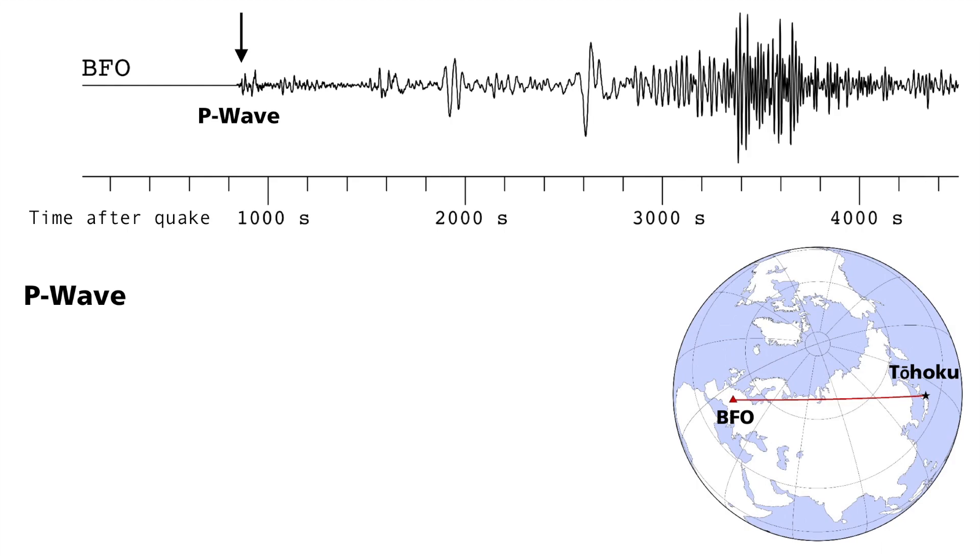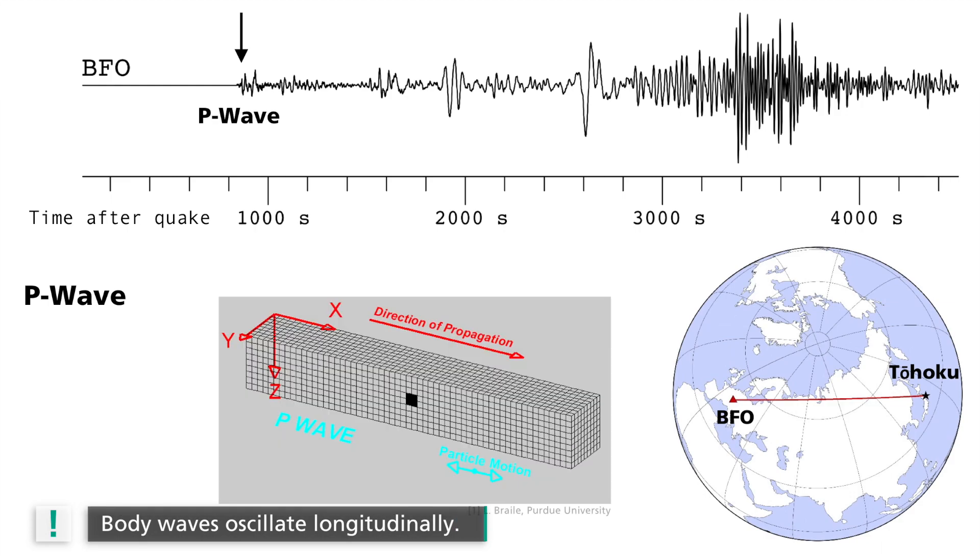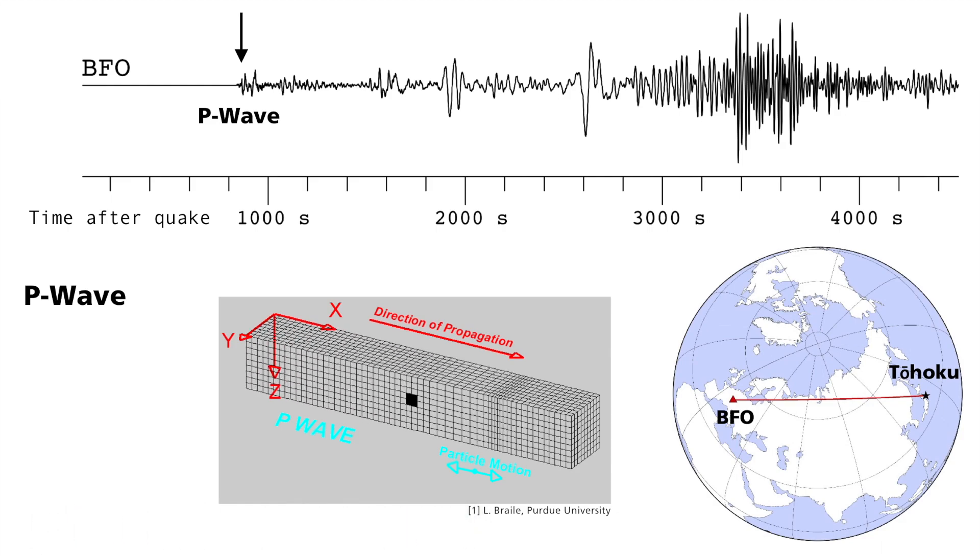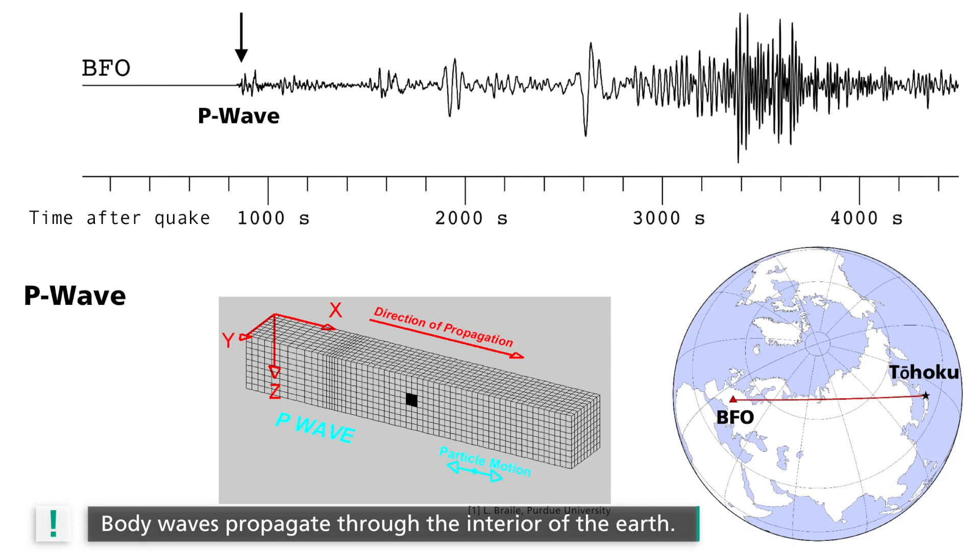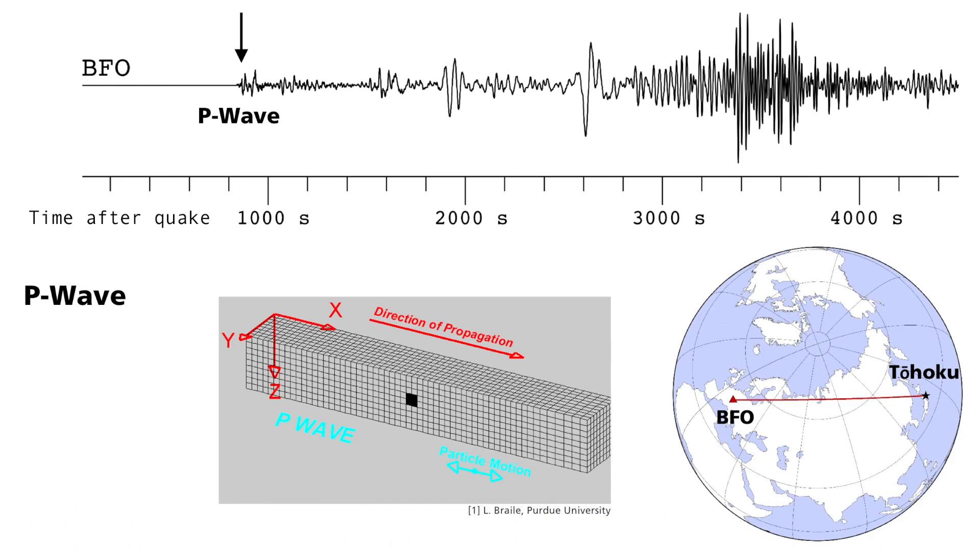P waves. These are the first or primary waves to arrive, hence the P. They oscillate parallel to the direction of propagation, this is called longitudinally, which means that they are ultimately acoustic waves. P waves move through the interior of the earth, which is why they are called body waves. In the animation you can clearly see how all movement only takes place in one direction.